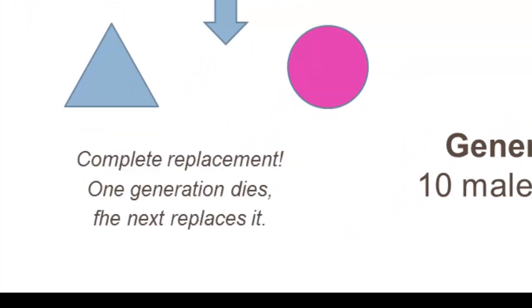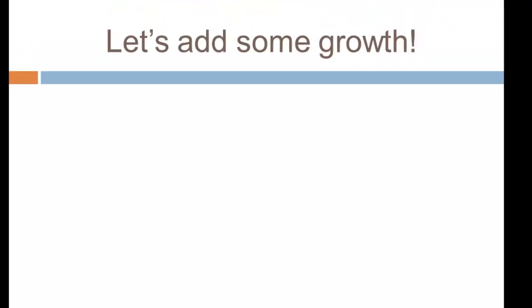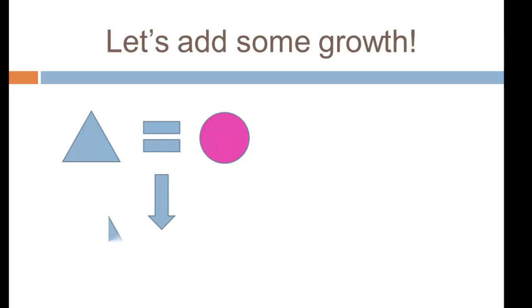In our model we're going to assume complete replacement, meaning that as one generation reaches adulthood the prior generation dies. So all we have to do to calculate growth in our population is calculate fertility, and that makes it a lot simpler. Now let's add some growth to this model — a simple fertility-driven model.